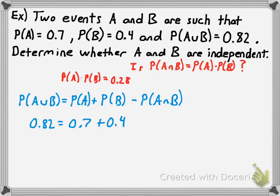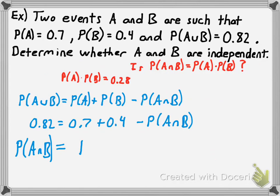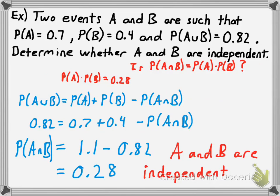We solve for P(A and B) by rearranging the addition rule. Adding P(A and B) to both sides and substituting, we get P(A and B) = P(A) + P(B) − P(A or B) = 0.7 + 0.4 − 0.82 = 0.28. Since P(A and B) = 0.28 and P(A) × P(B) = 0.28, those two values are equal, which indicates that events A and B are independent of one another. That's working with independent events and the product rule. See you next time!